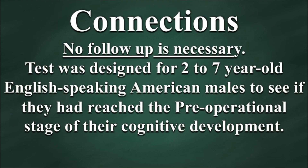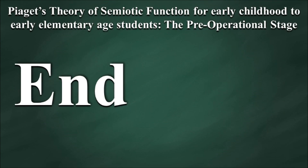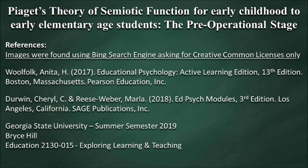No follow-up is necessary. The test was designed for two to seven-year-old English-speaking American males to see if they had reached the pre-operational stage of their cognitive development. That was the only demographic I was given to study. If you want to use these images, I left a link in the video information area where you can download a PowerPoint of this presentation. Take care and thanks.